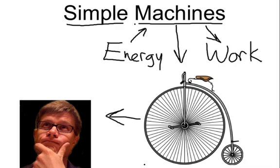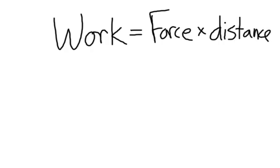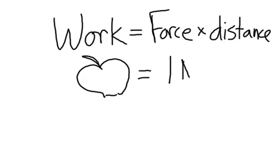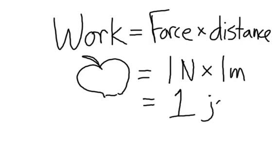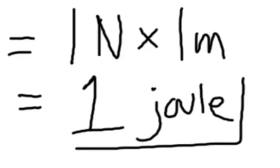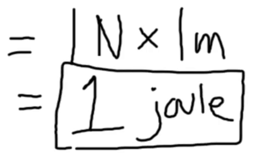Now that we've defined a machine as anything that can use energy to do work, we should probably define what work is. Work in science is defined as a force exerted over a distance. So let's say I lift an apple. An apple has a weight of 1 newton and I lift it 1 meter. Well then the work is the force times the distance, or 1 newton times 1 meter, or 1 joule of work is done. And I could use a simple machine to do such a task.